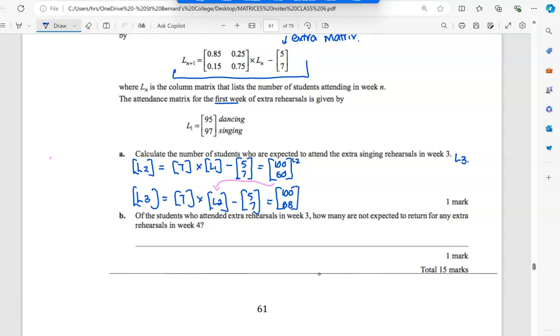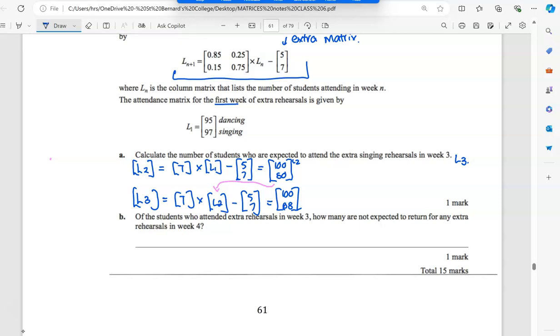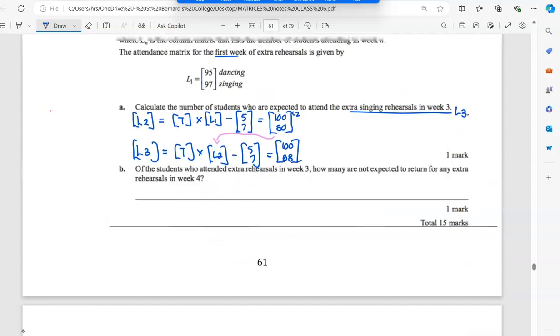So we've lost. So then the next question says, of the students who attend rehearsals in week three, how many are expected not to return to rehearsal in week four? What's that going to be? It's going to be 12, isn't it? So it said how many extra singing rehearsals in week three? Who was top? Singing was on the bottom. So we'll say 68 are singing. And then it says, of the rehearsals in week three, who will not return next in week four? So that's just step by step. We know it's the 5 and the 7, which we know. It'll be 12 not expected to return because we're losing them. You could have found S_4 and seen the total difference, but we can see that it's 12.